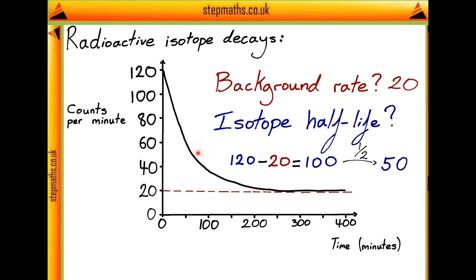Now, on our graph, this should be measured at 70 counts per minute. This is because 50 counts are coming due to the isotope, with the remaining 20 due to the background radiation. Reading off of our graph, we can see that this comes in at a time of 40 minutes. Therefore, the isotope half-life is going to be 40 minutes.